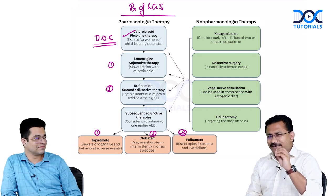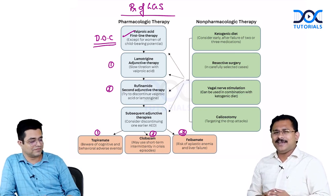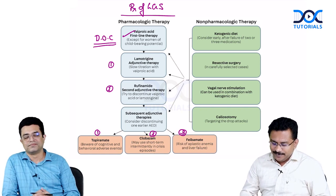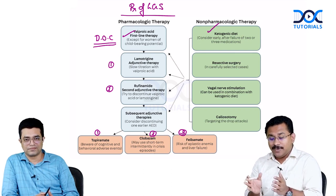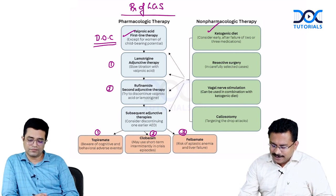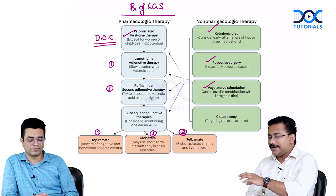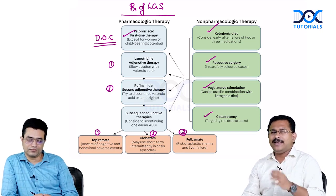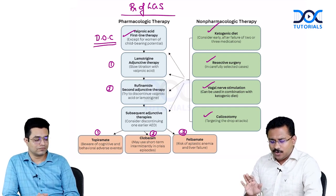Along with pharmacological therapy, since LGS is refractory to treatment, non-pharmacological measures can also be helpful. Ketogenic diet is often preferred in refractory epilepsies and can be used here as well. In selective cases, resective surgery or vagal nerve stimulation can be used. If drop attacks are the prominent seizure type and not responding to medications, callosotomy may be done, though it is not commonly performed — medications are tried first. This is how we manage LGS.